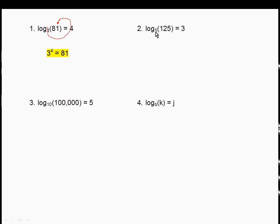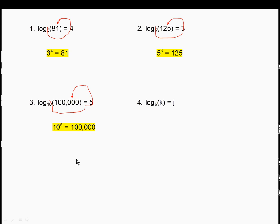For number 3, log base 10 of 100,000 = 5 gives 10 to the 5th = 100,000. For number 4, log base b of k = j gives b to the j = k — you can't verify that, but follow the same pattern: the base of the log matches the base of the exponential, whatever the log equals is the exponent, and the remaining value goes on the other side of the equal sign.